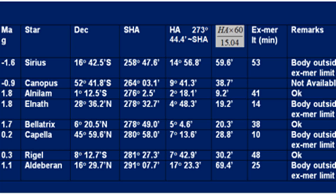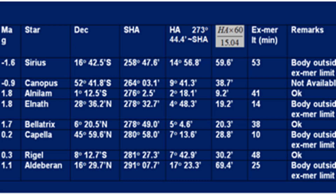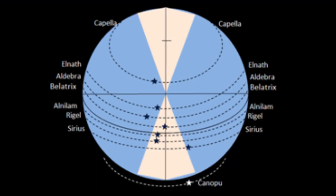Canopus has declination 52 degrees 41.8 south — this star would probably be suitable, but it is below the horizon and cannot be observed. Next is Al Neilam, whose declination is only 1 degree 12.5 — it looks like it would have a good Ex-Meridian range. Its hour angle is just 2 degrees 18.1 minutes, meaning it is only 9 minutes away from the meridian, while the Ex-Meridian limit is 41 minutes, so it is suitable. El Nath has declination 28 degrees 36.2 North, making the star pass very close to the observer's zenith, so MZD is small and the Ex-Meridian limit is only 14 minutes, while the travel time is 19.2 minutes — outside the limit.